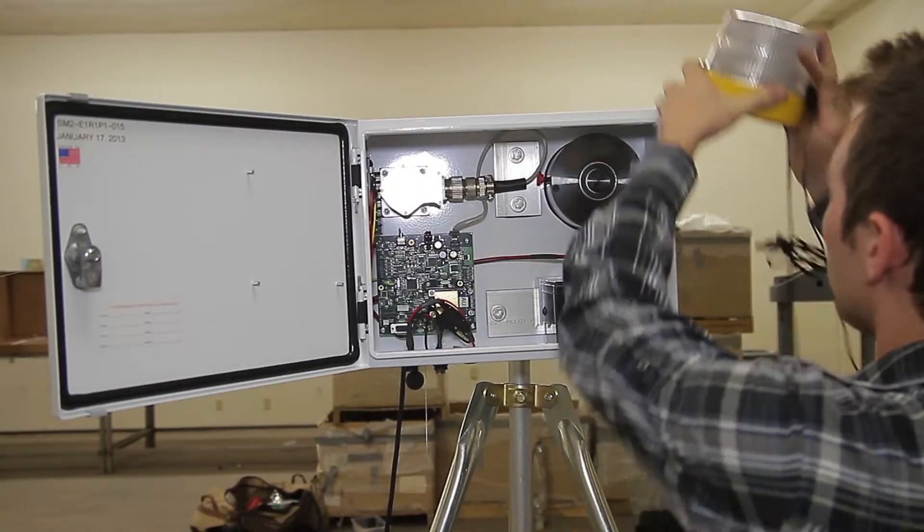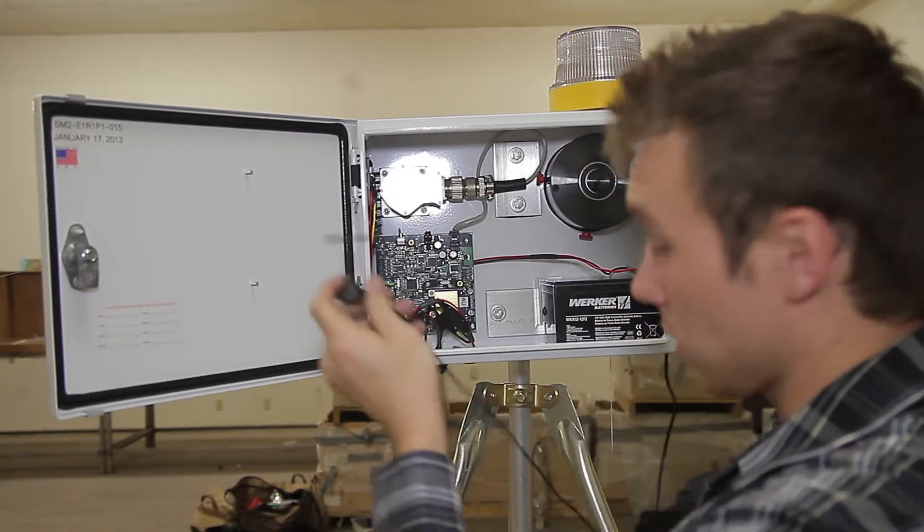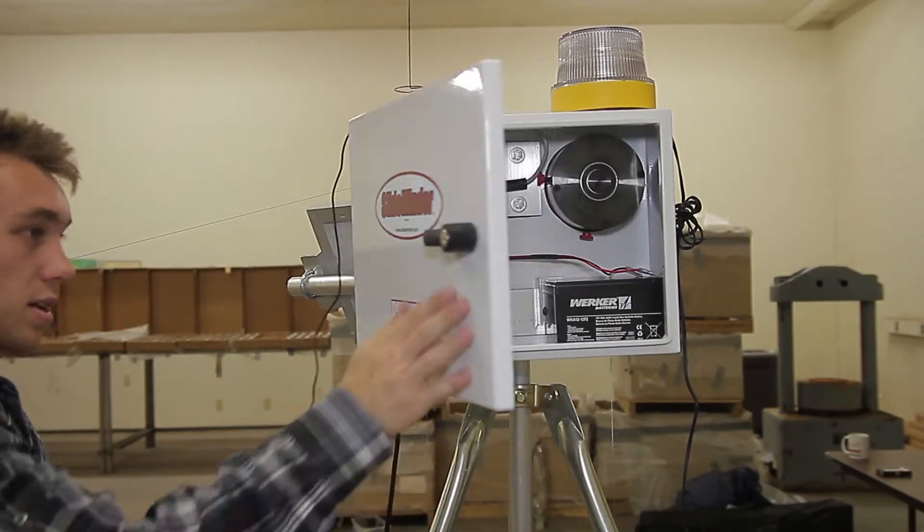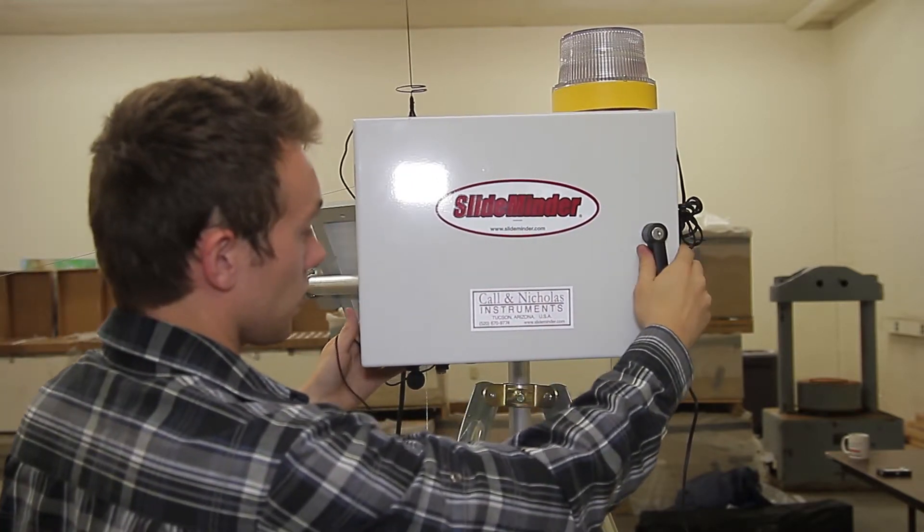Now let's place the strobe on top and the antenna. Go ahead and close up the box for a moment.